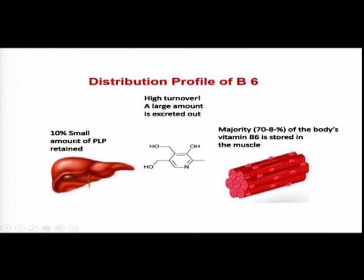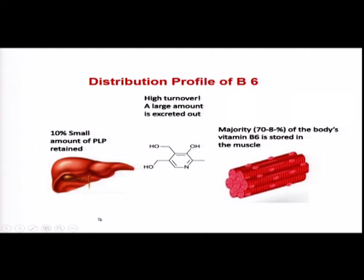Only about 10% of pyridoxin is retained in the liver. Most is used and excreted. Interestingly, 70 to 80% of vitamin pyridoxin is stored in the muscle. That is one reason why even during deficiency conditions the muscle has a good reserve of pyridoxin and it takes a while for the muscle to become completely depleted. The muscle acts like a reservoir — during times of deficiency, pyridoxin is drawn from this reserve. Only when it is completely depleted do we show all symptoms of pyridoxin deficiency.